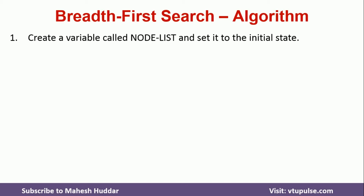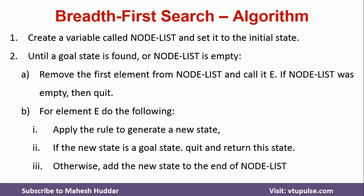If there is an element in the node list, we do the following with respect to element E. First, we apply a rule to generate the new state — that is, we try to get the successors of that particular E. If the new state is a goal state, we quit and return that state. Otherwise, we add the new state to the end of the node list, and we repeat this step until we reach the goal node.